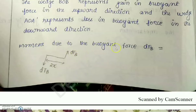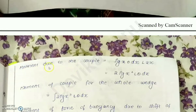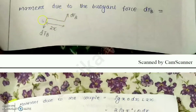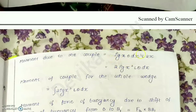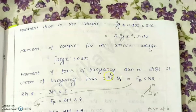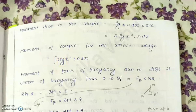The moment due to the couple is dFB into 2x. Substituting dFB = rho·g·x·theta·dx·L, the moment becomes 2·rho·g·x²·L·theta·dx. To find the moment due to the entire wedge, integrate: integral of 2·rho·g·x²·L·theta·dx, giving integral of rho·g·x²·L·theta·dx.